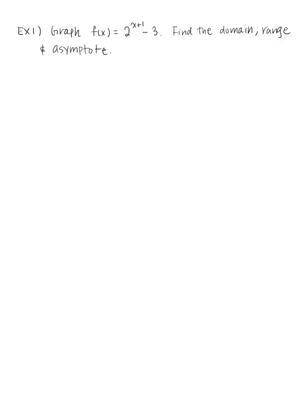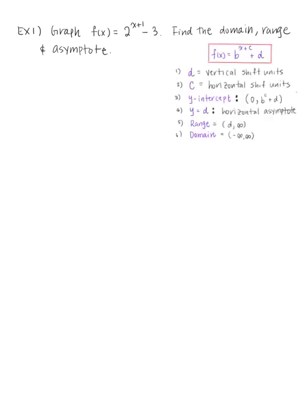Let's take a look at Example 1: graph f(x) = 2^(x+1) - 3 and find the domain, range, and asymptote. So let's first determine who plays the role of d (the vertical shift), c (the horizontal shift), and from there we can find the y-intercept, horizontal asymptote, domain, and range.